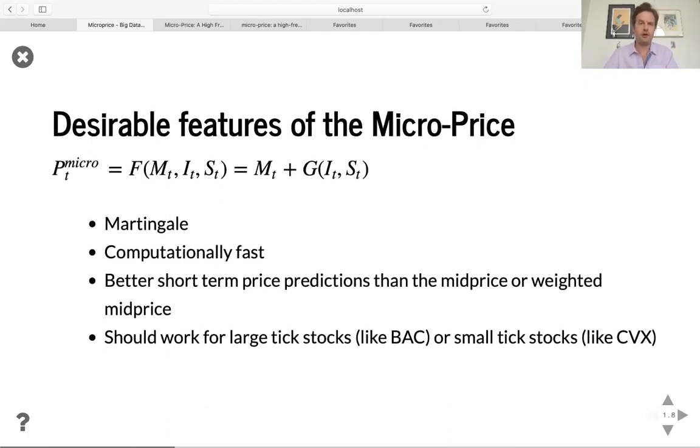So here's what we're going to aim for. The micro price will end up being a function of three variables: the mid price, the imbalance at the top of the order book and the bid ask spread. And we'll see that some of the features of the micro price are that micro price is a martingale, it's very fast to compute, and in the paper, you can see that the micro price gives better short term predictions than either the mid price or the weighted mid price. And in some sense lives between the two. And I will demonstrate this with some large tick stocks like bank of America, where the spread is mostly one tick, and small tick stocks like Chevron where the bid ask spread is more often two ticks or three ticks.